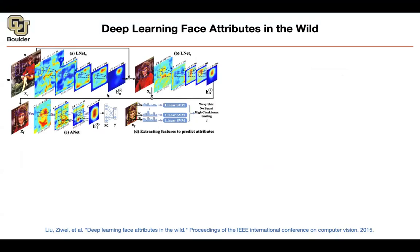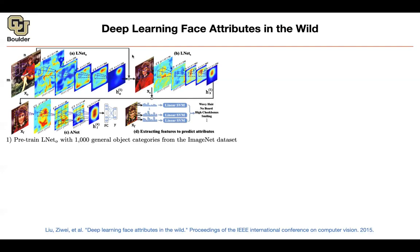Don't worry about this figure yet — I'm going to break it apart. There is a lot of information here. Let's focus on this part of the figure first. It's your neural network. It's going to take an image as an input. It has convolutional layers and a bunch of max pooling. And then you stop here — these are going to be your features. There's going to be a head on top of this, which is a classification head that we are removing and not showing.